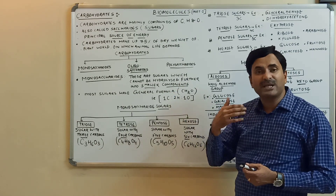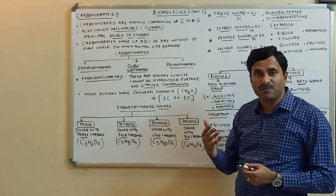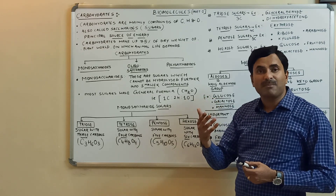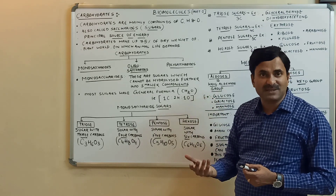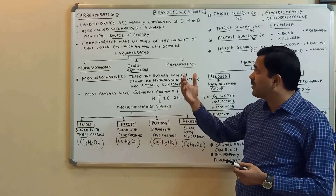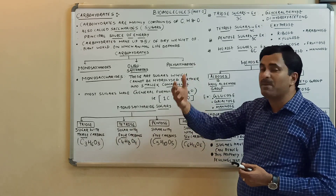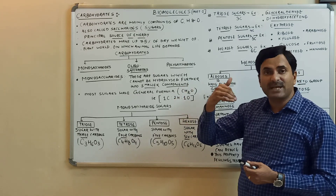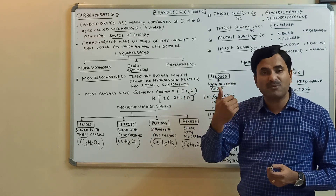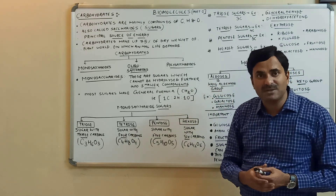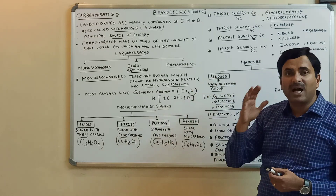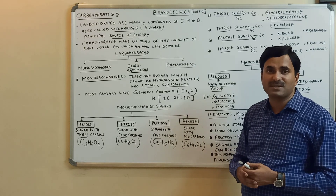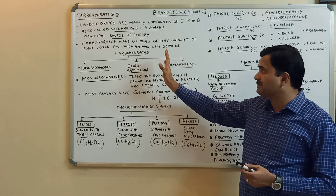The 75 percent dry weight of plants is made up of carbohydrates, on which animal life depends. We are heterotrophs and plants are autotrophs — they produce sugars by the act of photosynthesis. The food prepared by the plants is taken up by animals, so we animals are dependent on the plants.